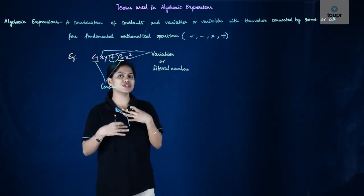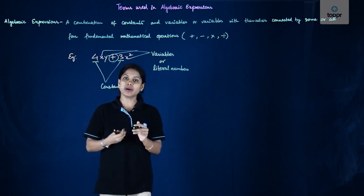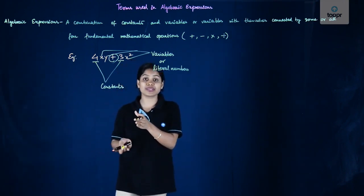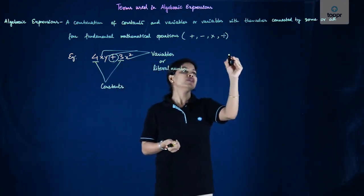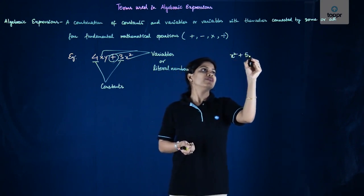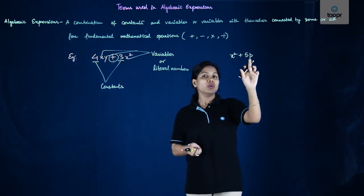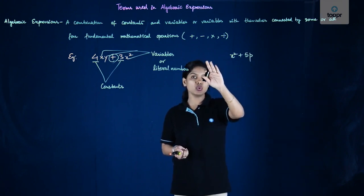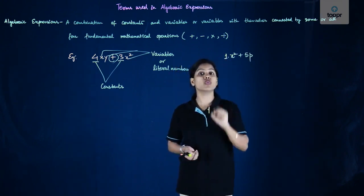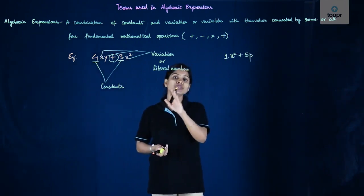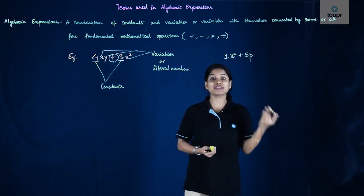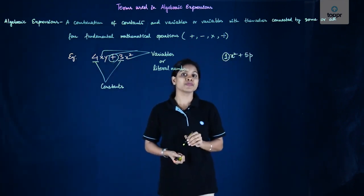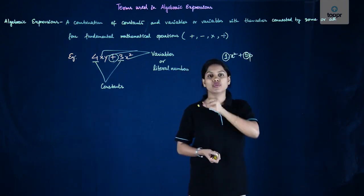Now every variable is associated with a constant. If there is no constant, we say the constant that is there is 1. For example, if we have x squared plus 5p, along with the variable p the constant is 5, and along with the variable x squared there is no constant, so we say the constant there is in fact 1. Now the constant associated with each variable or with each literal number has a name — it is called the coefficient. So the coefficient of x squared is 1 here and the coefficient of p is 5.